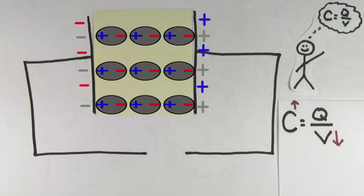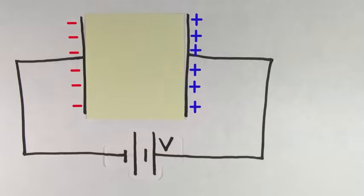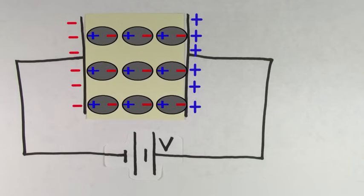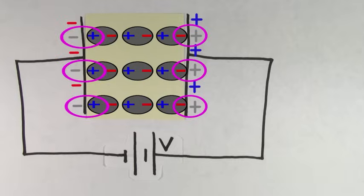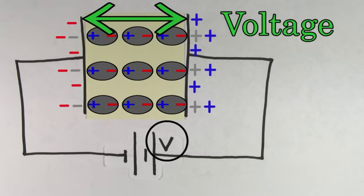Let's look at another case of inserting a dielectric. Imagine we again let a battery of voltage V fully charge this capacitor, but this time let's leave the battery connected. Just like before, the atoms and molecules in the dielectric are going to stretch and orient themselves so that the negatives are facing the positive plate and the positives are facing the negative plate, which again reduces the voltage between the two capacitor plates. But remember, we left the battery connected, and this battery is going to try to maintain the voltage across the capacitor equal to V. So since the dielectric reduced the voltage, the battery is going to cause even more charges to get separated until the voltage across the capacitor is again the same as the voltage of the battery.